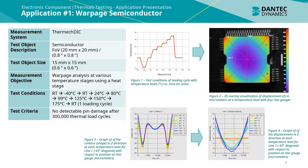Figure 3 shows a graph of the contour shape in the Z direction at each temperature level for line 1, which is the minus 45 degree diagonal line, with respect to the position on the line gauge in micrometres. The far right figure is a graph of the displacement in the Z direction at each temperature level for line 1 with respect to the position on the line gauge.